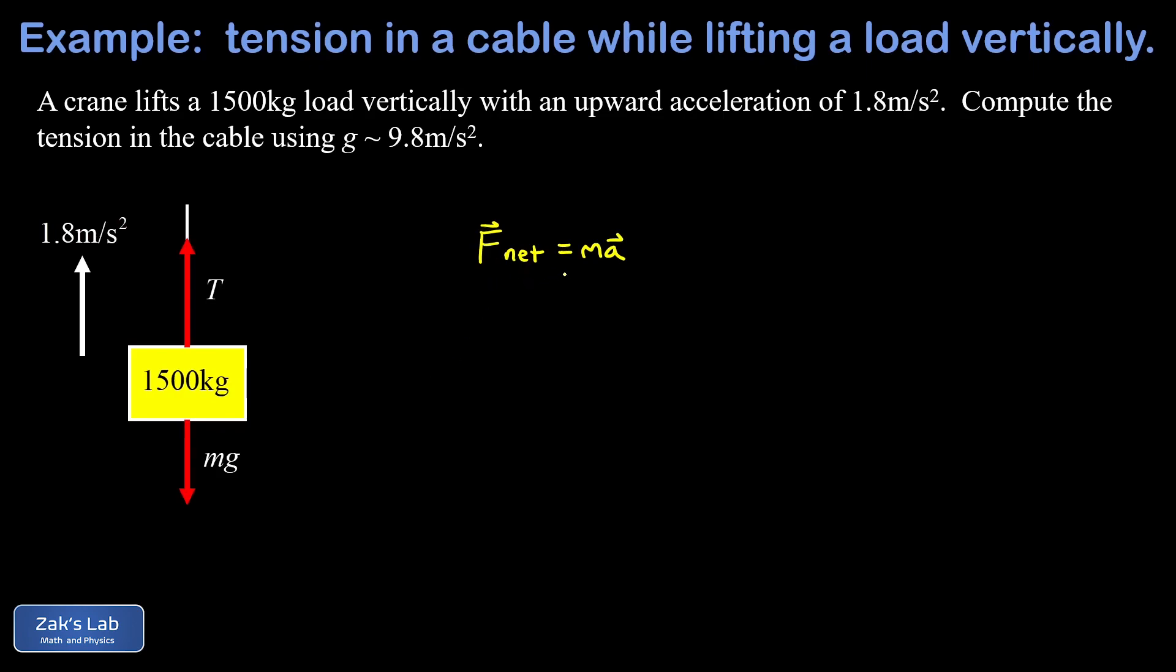This means f net can be written as T minus mg, and that's going to be equal to ma. Now all we have to do is solve for T, and we find that T is equal to mg plus ma, and we can factor an m out of this to get a nice symbolic solution for T. So it's m times the quantity g plus a.